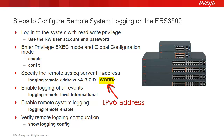The IPv6 address is a character string of up to 45 characters. We will enable logging for all events with the command logging remote level informational. Then we will enable the remote system logging with command logging remote enable. After that, we will verify the remote logging configuration using the command show logging config.